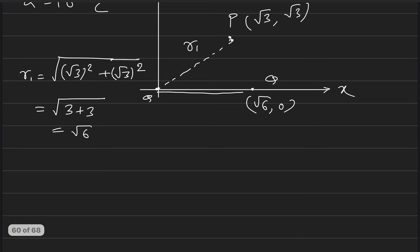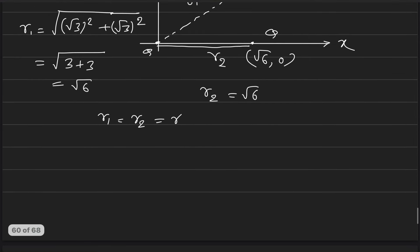And r2, this distance has to be given to us. Because y is 0, it is just the x coordinate, so r2 will be root 6. So now you see that r1 is equal to r2.